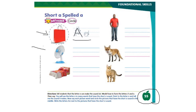The word bag has short A in it, so we write A on the line. Take a look at the second one — this is a fan. F-A-N. Fan. If you hear the sound A in the word fan, write A on the lines here. The third picture is a bed. The word bed does not have the sound A in it. Take a look at this picture — man. M-A-N. Man. If it has the sound A in it, write it on the line.